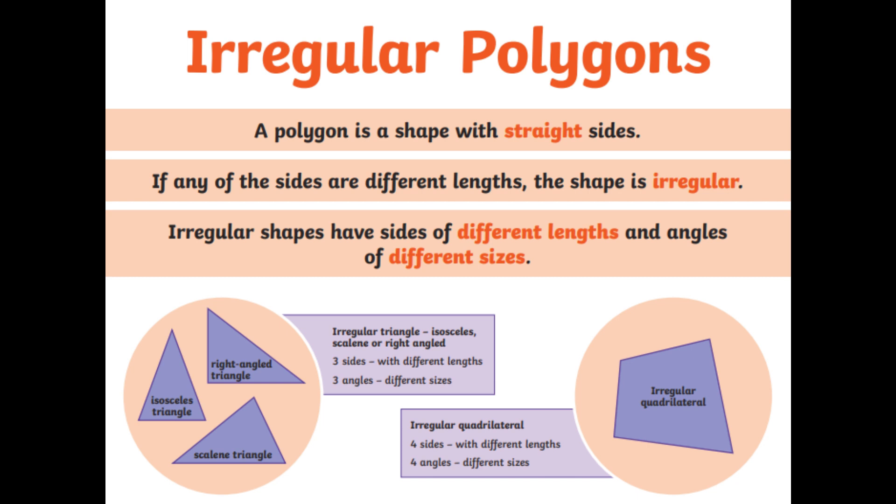Moving on. The alternative to a regular polygon is an irregular polygon. As you can see, this is one still with straight sides. However, if any of the sides are different lengths from each other, then we refer to it as an irregular. So irregular shapes have sides of different lengths and angles of different sizes. So this time, if you have a look at the images below, you will see scalene triangle, isosceles triangle and a right angle triangle. The sides are different lengths. Therefore, it is irregular.